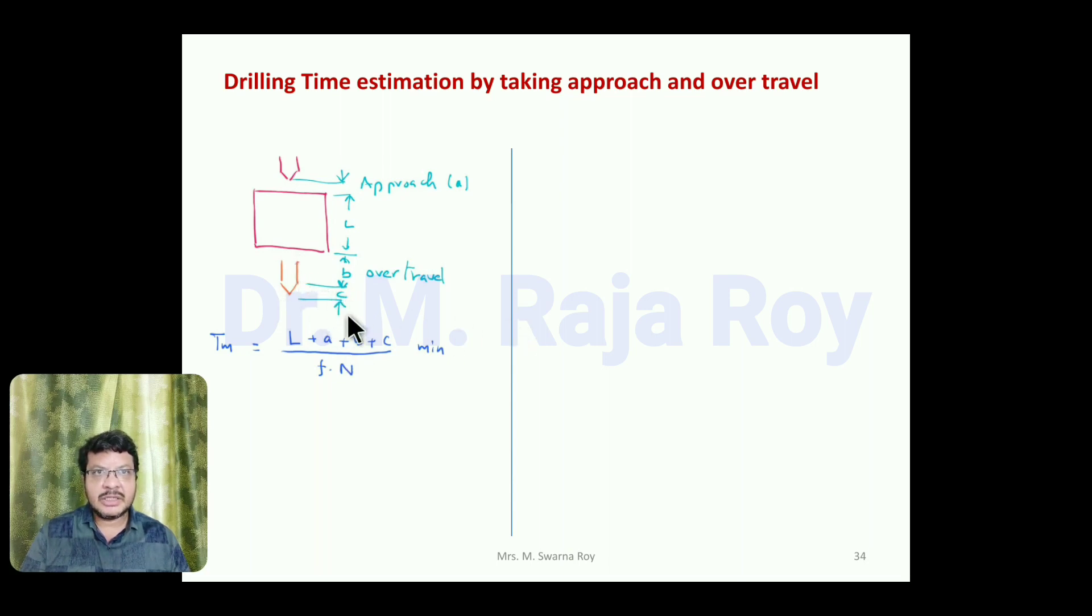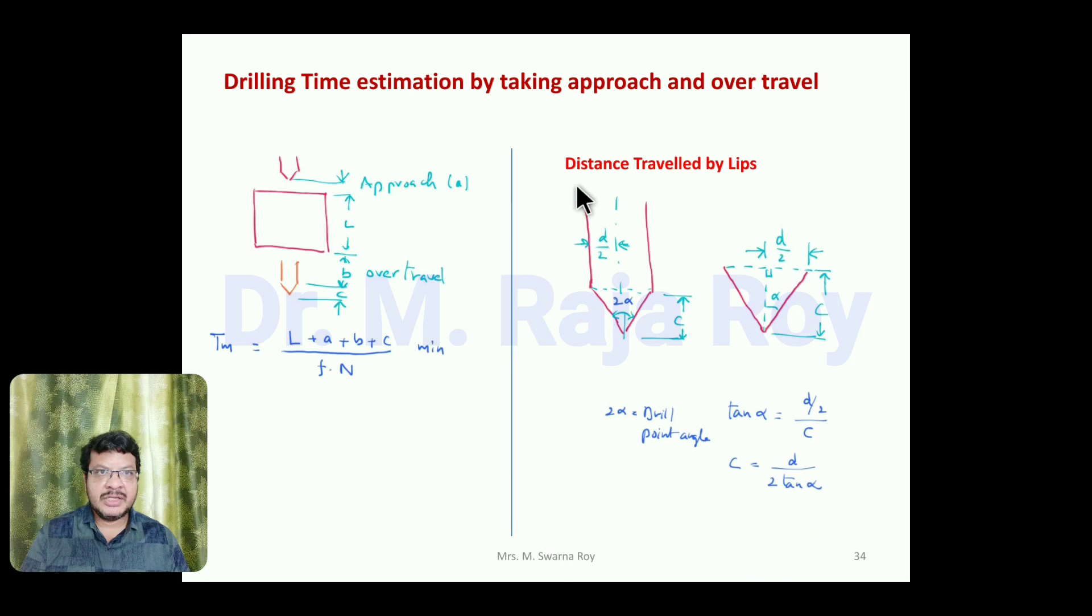This is the distance because of this cone. You have to find the distance traveled by the tip because of this conical shape. The cone angle—total drill point angle—is 2α, the total diameter is D, half of it is D/2. This is the distance the drill bit has to move after completing the hole. I'm taking this small right angle triangle, total angle is 2α, half of it is α, opposite side is D/2, adjacent side length is C.